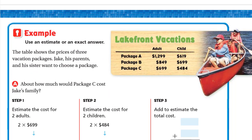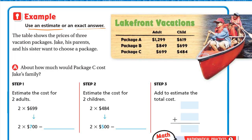Another example: use an estimate or an exact answer. The table shows the prices of three vacation packages. Jack, his parents, and his sister want to choose a package. At letter A: about how much would package C cost Jack's family? 'About' means we are estimating. Jack's family is Jack, his sister — two children — and his parents — two adults.